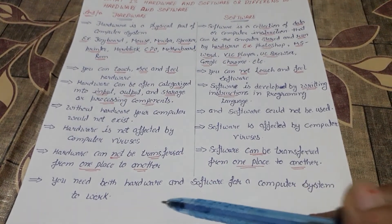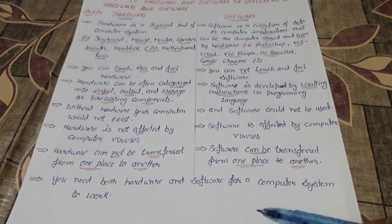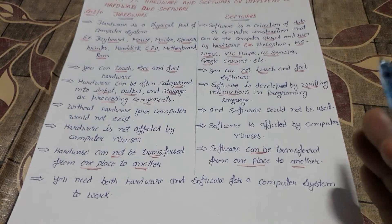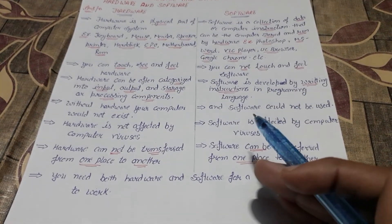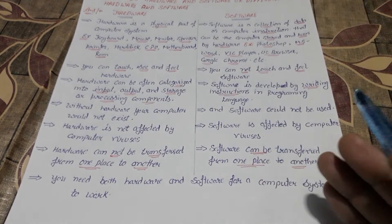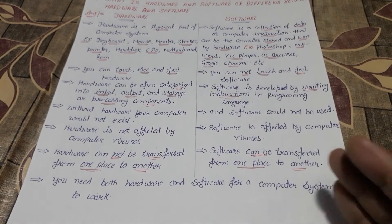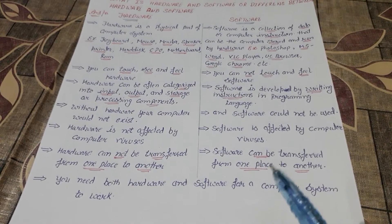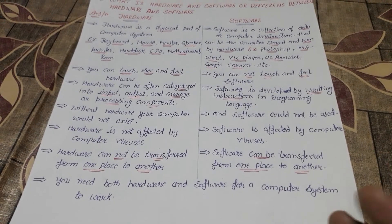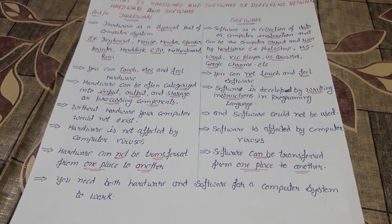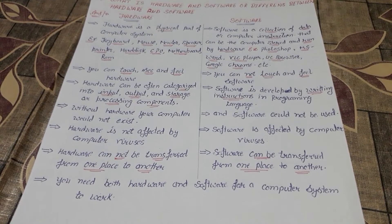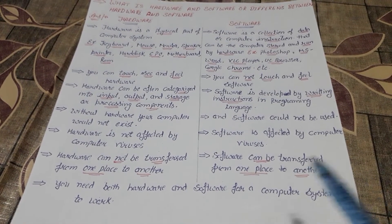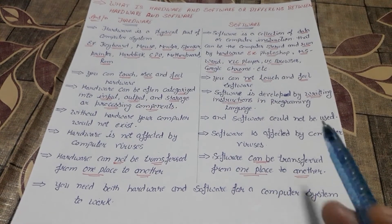You need both hardware and software for a computer system to work. Hardware without software is not possible, and software without hardware is not possible. Both are required together.